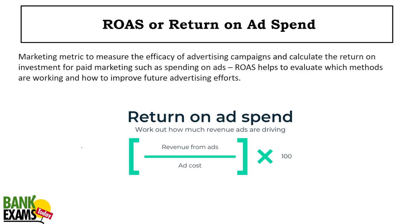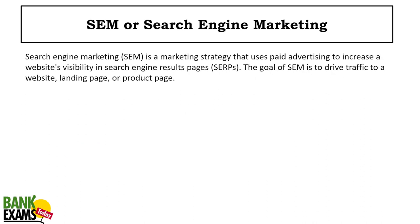Return on Ad Spend, or ROAS: the formula is revenue from ads divided by ad cost, multiplied by 100. For example, if you made 5,000 rupees from ads and the ad cost was 3,000 rupees, that gives your return on ad spend. SEM, or Search Engine Marketing, means using paid advertising to get ranked on Google or Bing.